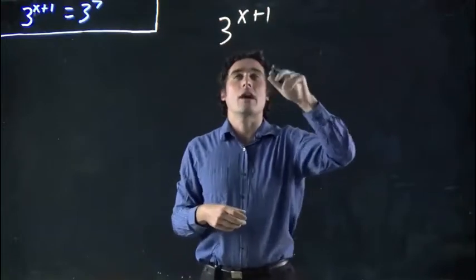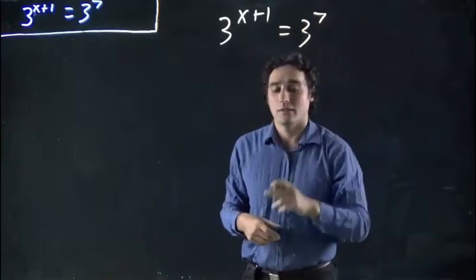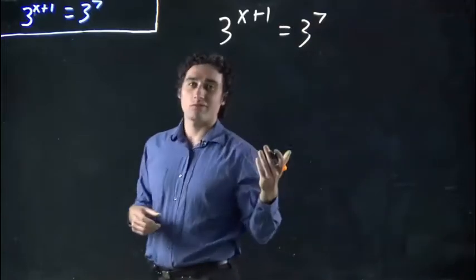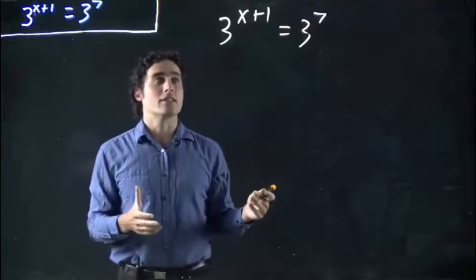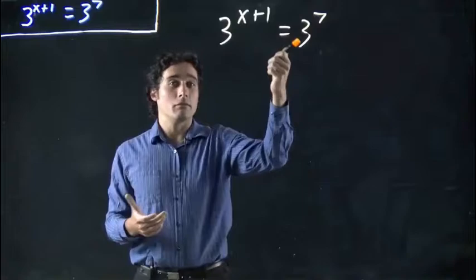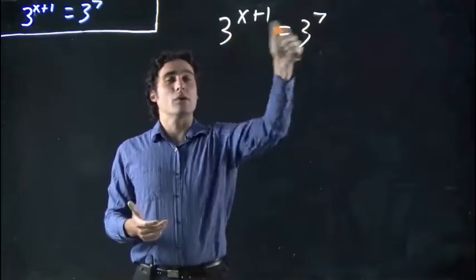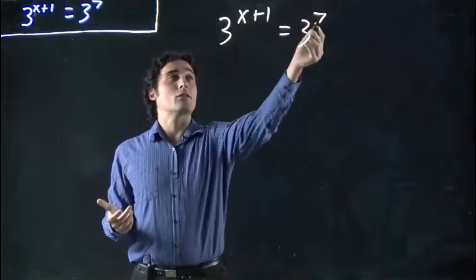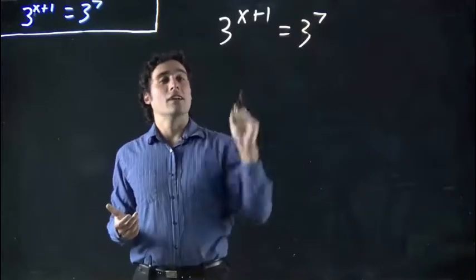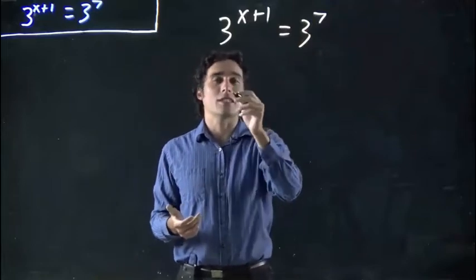3 to the power of x plus 1 equals 3 to the 7. Here's a simple way to solve this: these two bases are the same, so if the bases are same on either side of the equation, the exponents must be the same. Because this must equal 3 to the 7, this must also be 3 to 7.